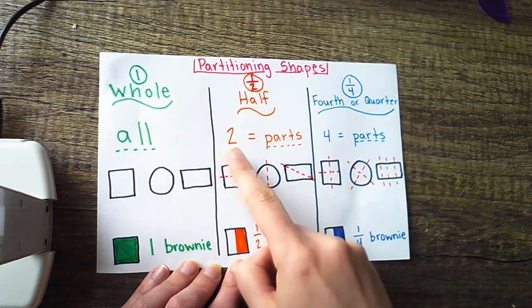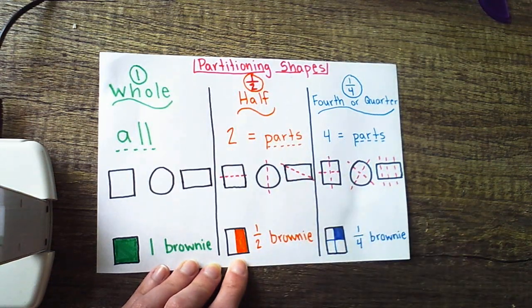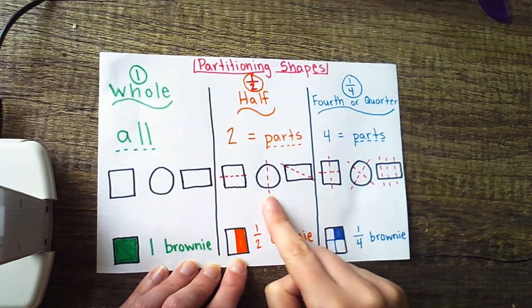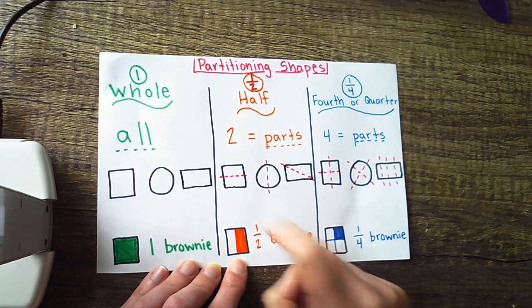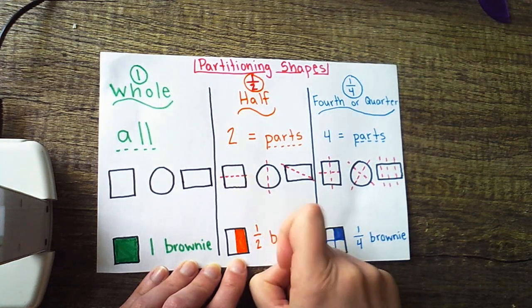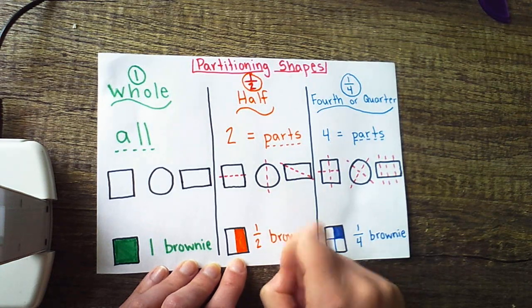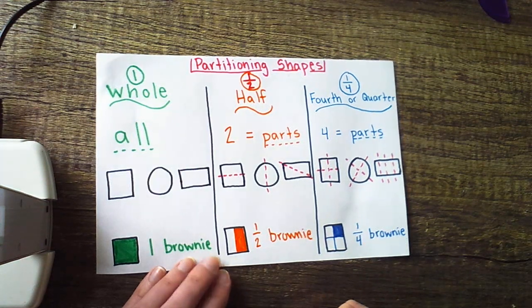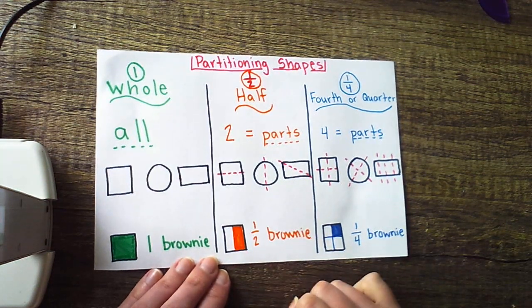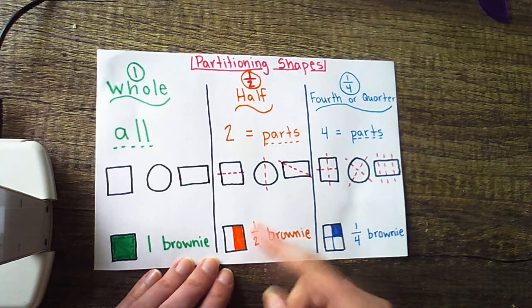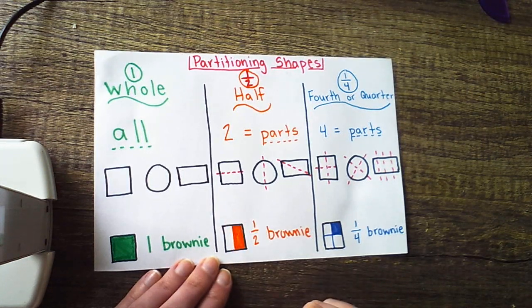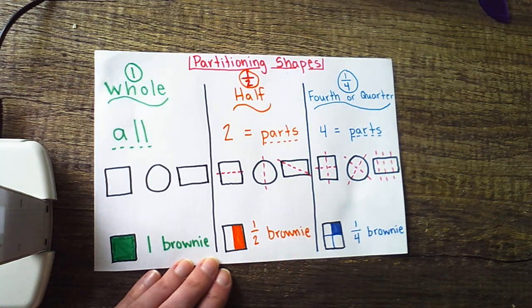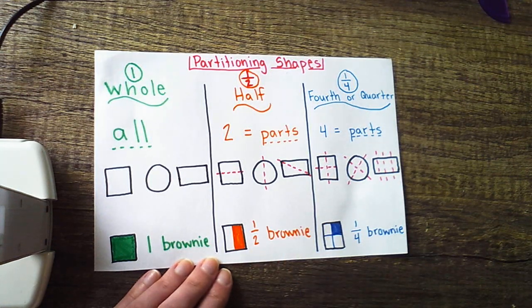Halves or one half is two equal parts. It's very important that we note that these parts are equal. So we can cut squares, circles, or rectangles into two equal parts. I can go across or horizontally. I can go up and down or vertically. I can also go across from corner to corner. If you had a brownie to share, you could think about starting with a square brownie and splitting it or partitioning it down the middle in order to have halves or give one half of your brownie, half of the whole, to your friend.